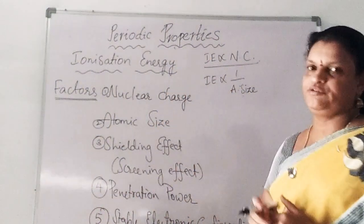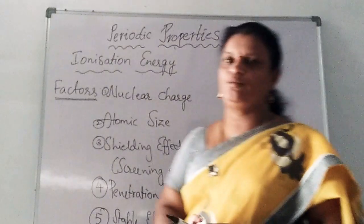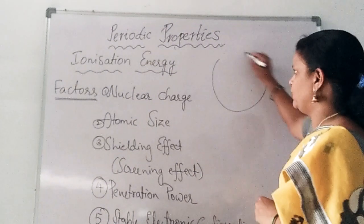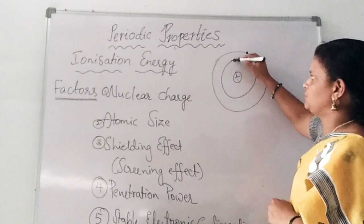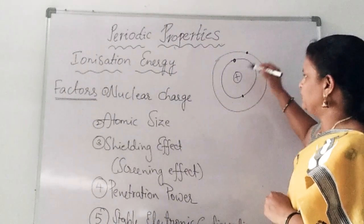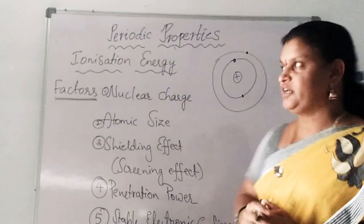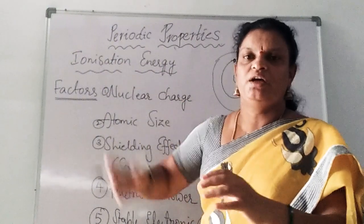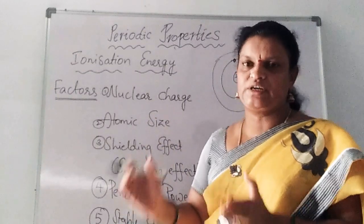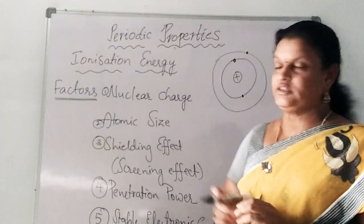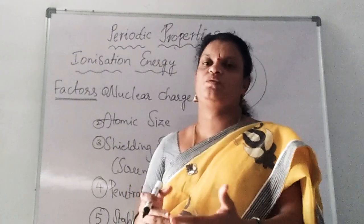Coming to the third factor — shielding effect. If you take an element with two shells, and the outermost electron is in the second shell while the first shell contains two electrons — when the nucleus wants to attract the outermost electron, those two inner electrons are revolving around the nucleus and they reduce the effect of the nucleus on the outermost electron. Because of that, the electron can be removed more easily. These inner electrons are acting like a screen.